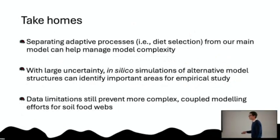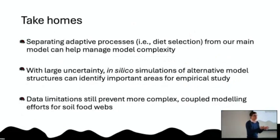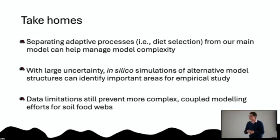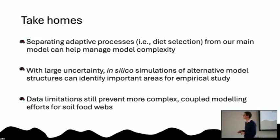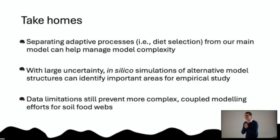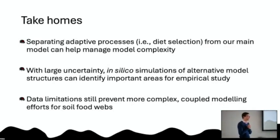In summary: separating adaptive processes like diet selection from our main model helps us interrogate that problem separately and then put it back into the main model. It's not as satisfying as a full complex adaptive system model, but we are far from having the data necessary to do that for soil. When uncertainty is still large, these in silico comparisons can help us get a sense of what's most uncertain. We're hoping that automated identification of these organisms in the next decade or so will help make more comprehensive modeling possible, but we're not quite there yet.